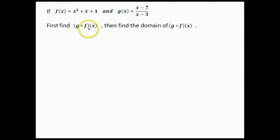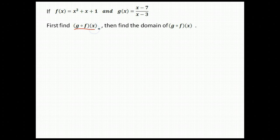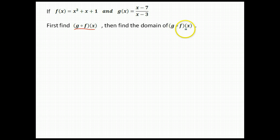For this problem, we are given f of x is x squared plus x plus 1, and g of x is x minus 7 over x minus 3. We're asked to first find g of f of x, and then after we've done that, find the domain for g of f of x.